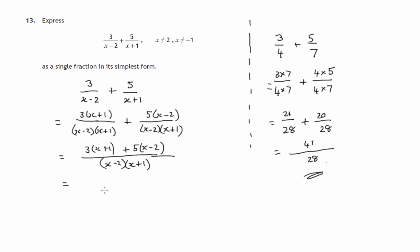The denominator is down there. So 3 lots of (x+1) is 3x+3. 5 lots of (x-2) is 5x minus 10.